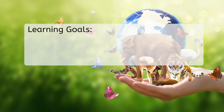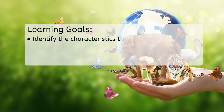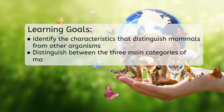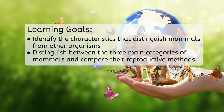But before we get started, let's look at our goals for this lesson. By the end, you'll be able to identify the characteristics that distinguish mammals from other organisms, distinguish between the three main categories of mammals, and compare their reproductive methods.